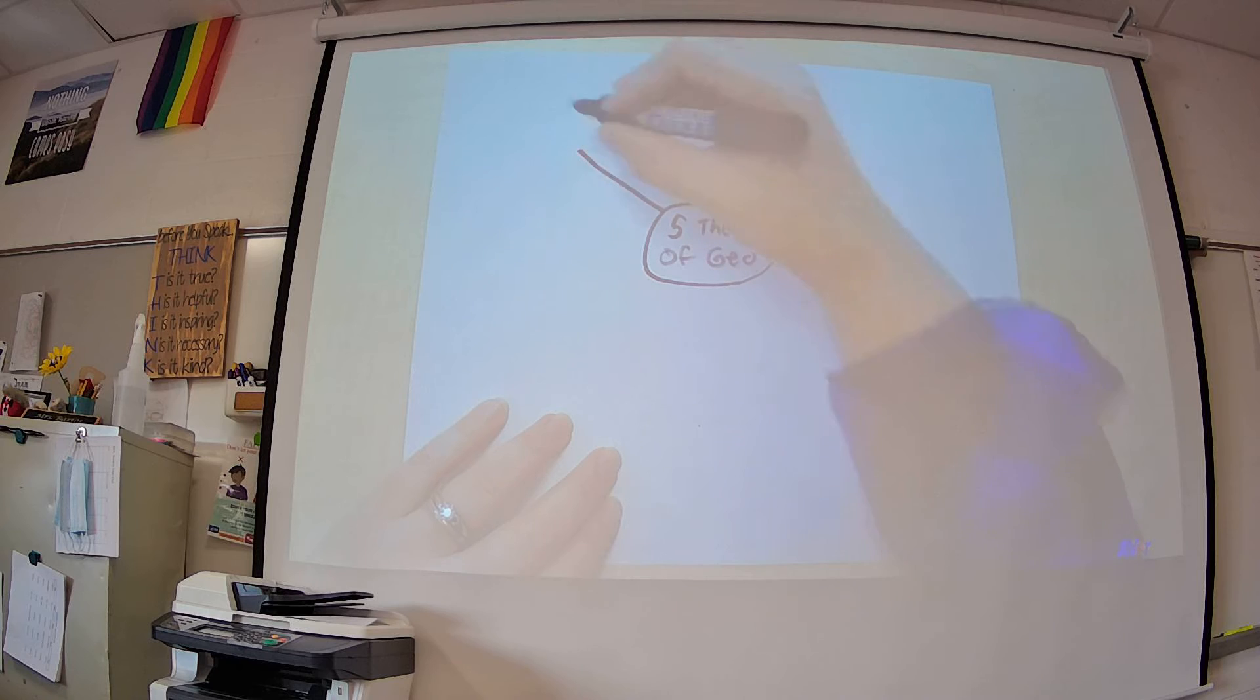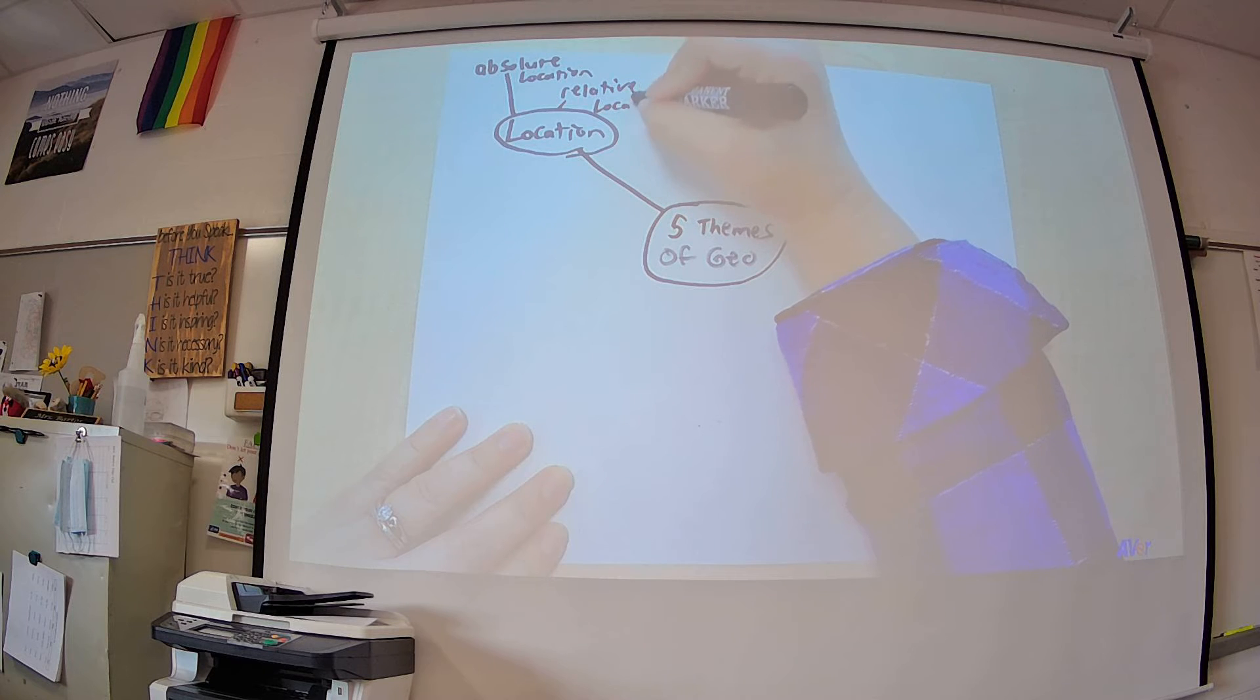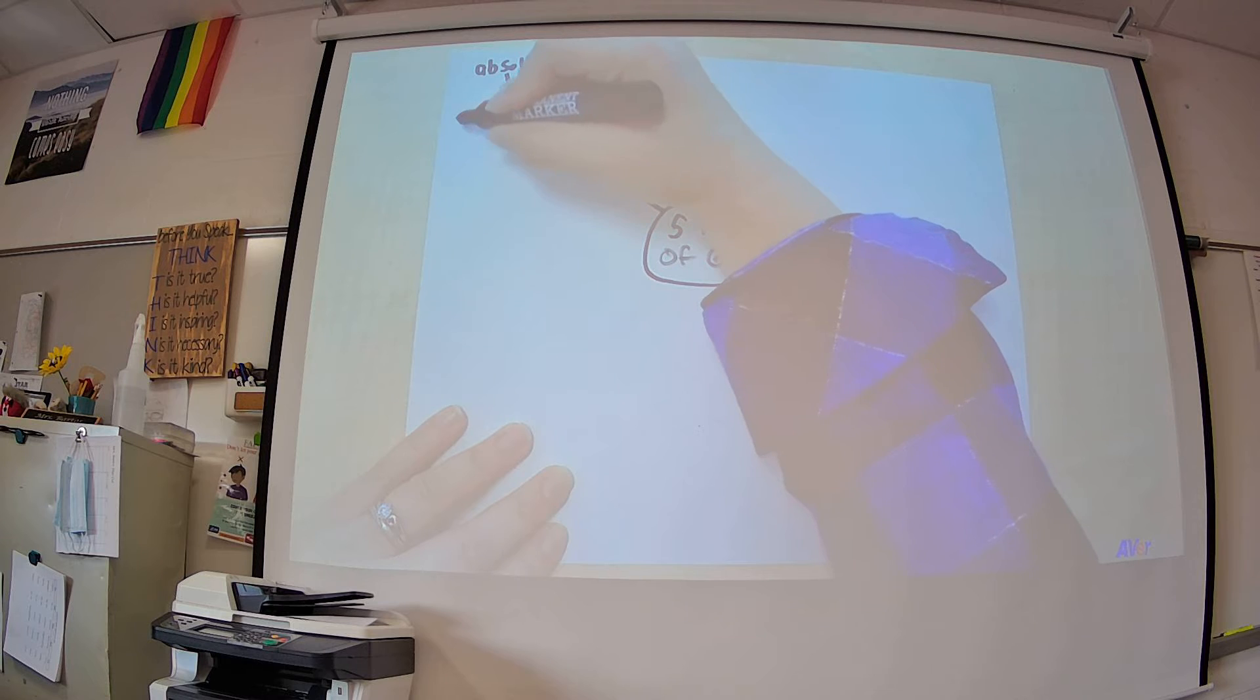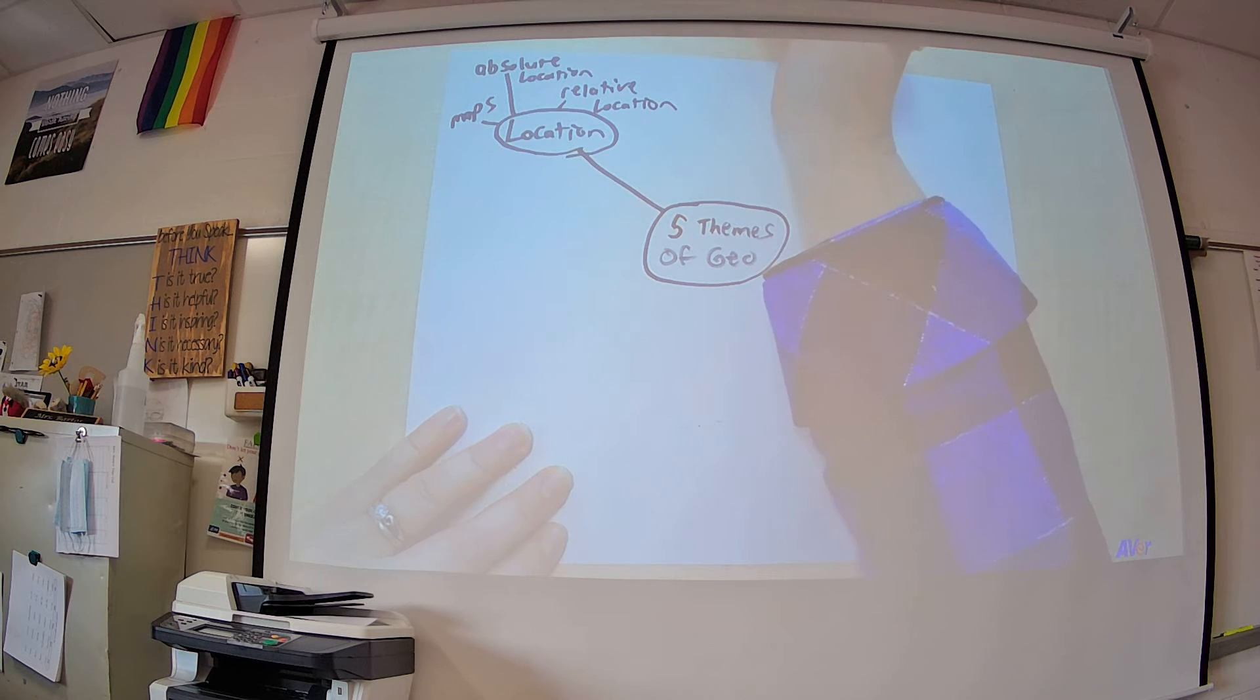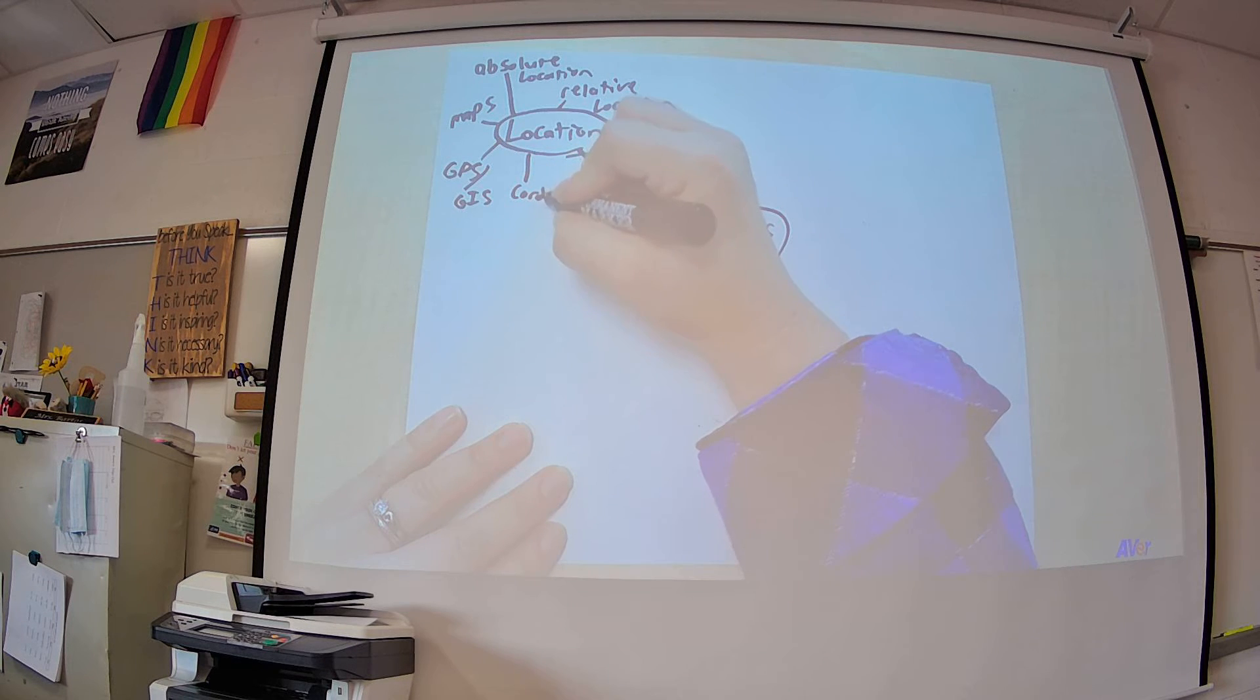Let's first take a look at location. That's our first theme. Some examples of location can include, of course, we talked about absolute location, relative location. We use maps to figure out location. We use GPS to figure out location. And we even use GIS when trying to map information onto it.